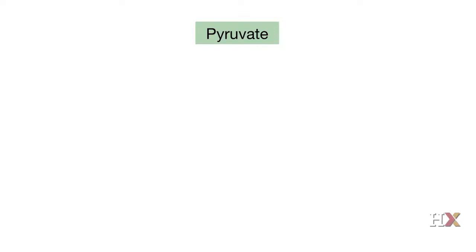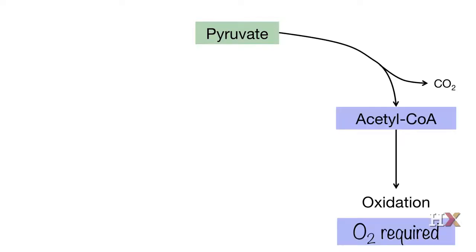Let's consider the fate of pyruvate under two different conditions. First, in aerobic conditions, pyruvate will be decarboxylated into an acetyl group, and the acetyl group is transferred to coenzyme A to form acetyl-CoA. Acetyl-CoA enters a metabolic pathway called the citric acid cycle, where more NADH is produced. Finally, all the NADH produced during the citric acid cycle and glycolysis will be converted back to NAD+ when NADH transfers its electrons to a group of complexes called the electron transport chain. We'll discuss this process in more detail later in the course.